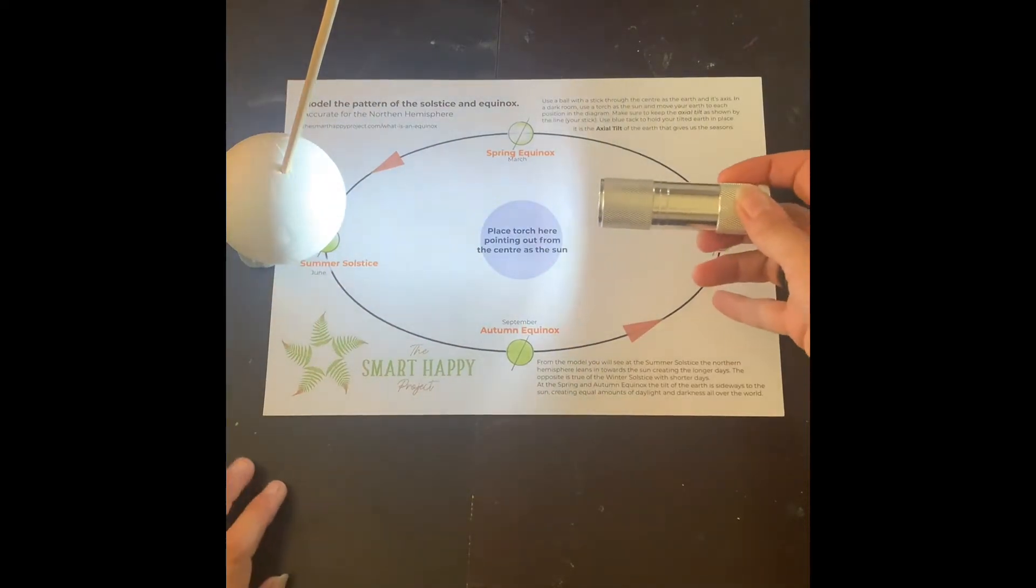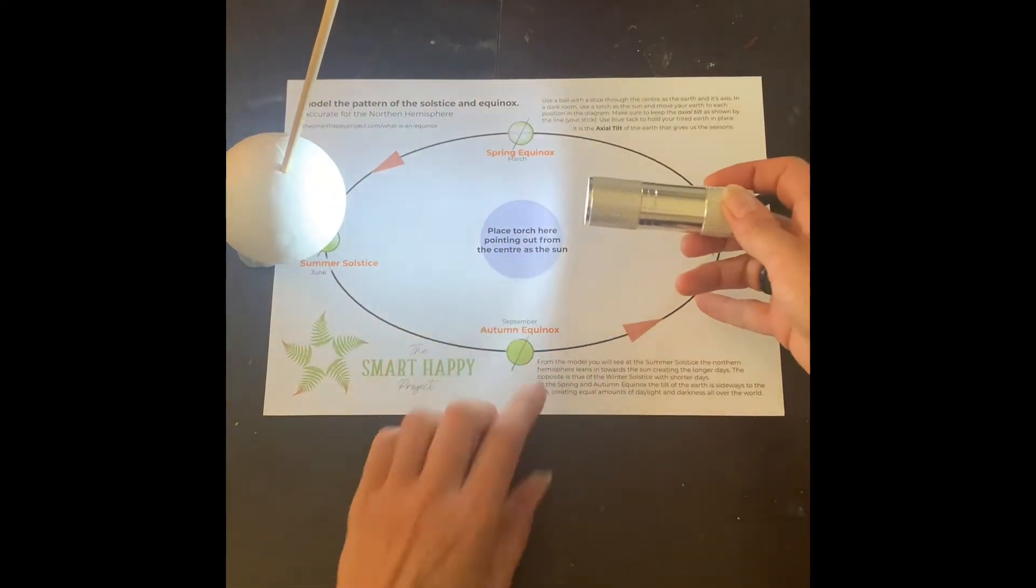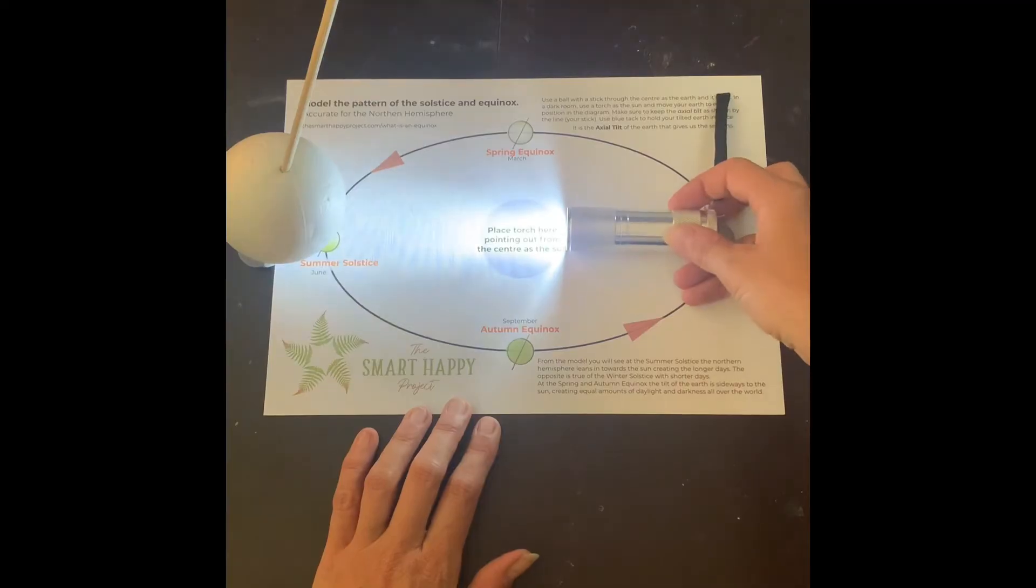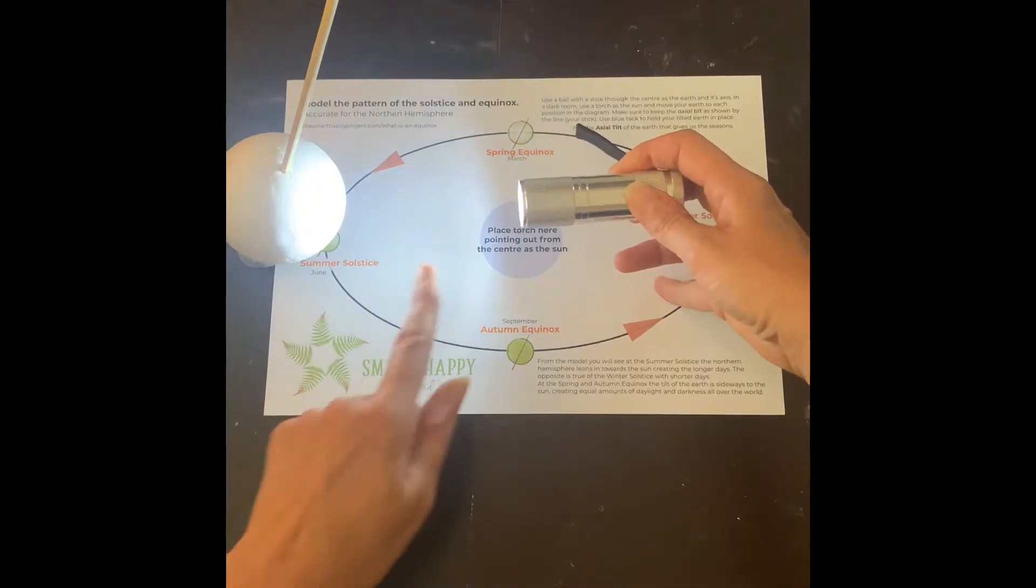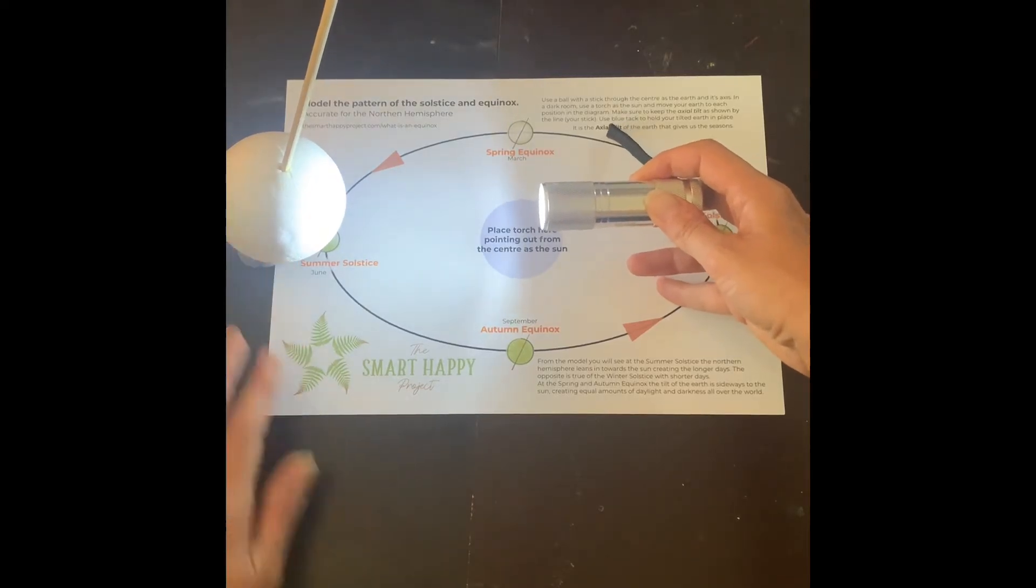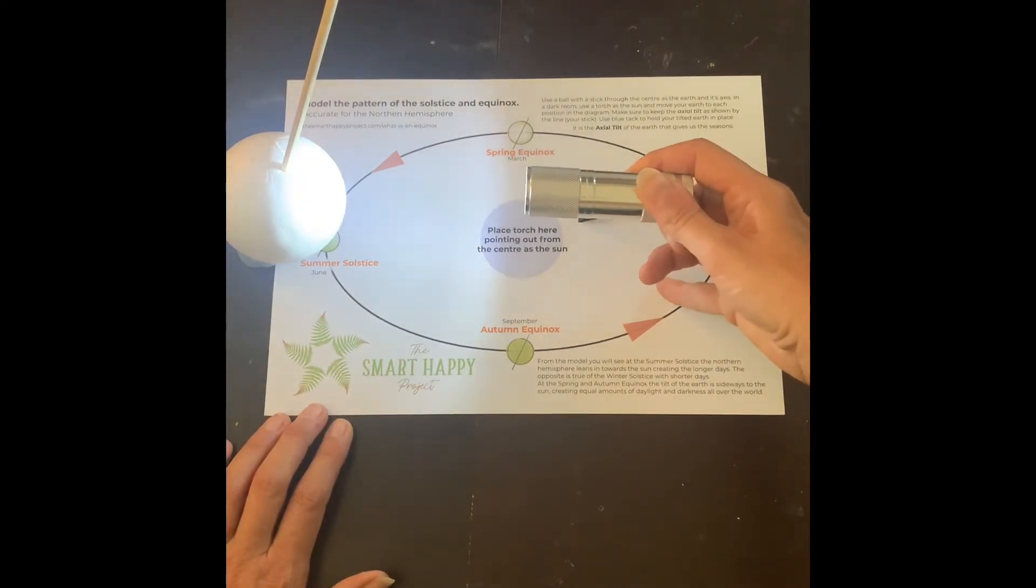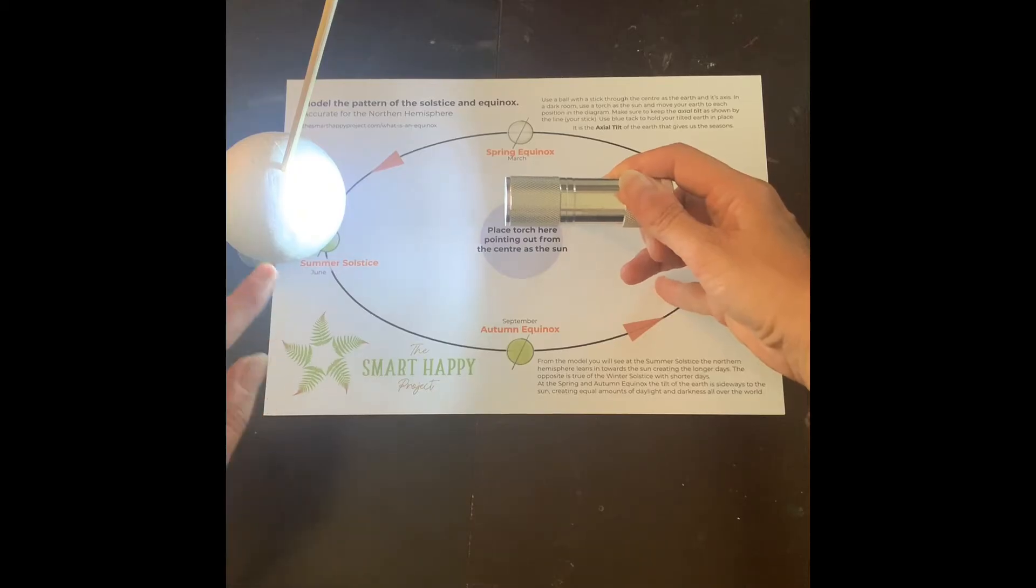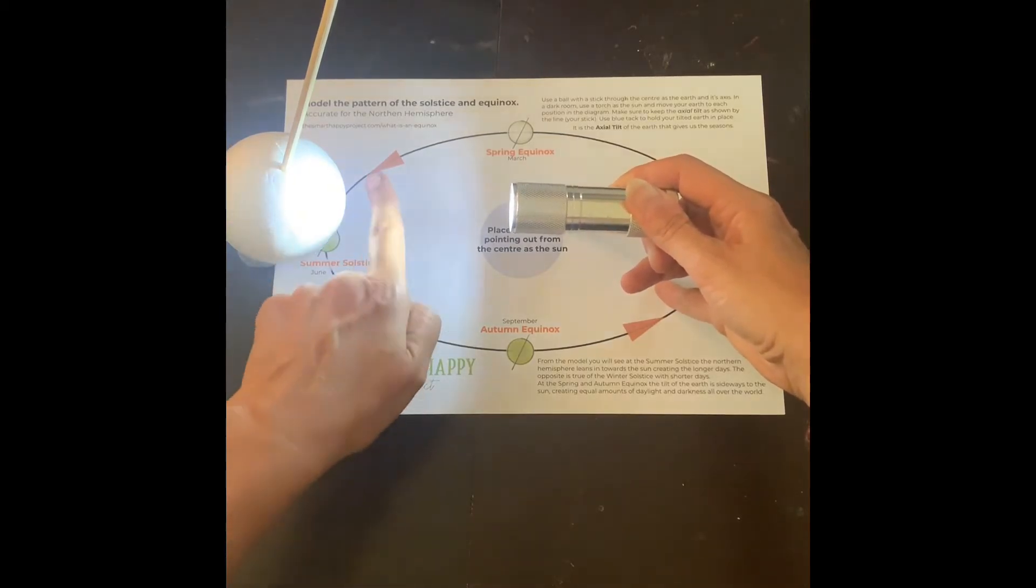And what I'm doing is I'm holding it from the center but I'm not holding it down on the paper - holding it slightly raised so that it's level with the Earth because the Earth isn't on the paper. And you can see here that the light from the sun hits the north pole and around slightly around the bottom it doesn't quite hit the south pole.